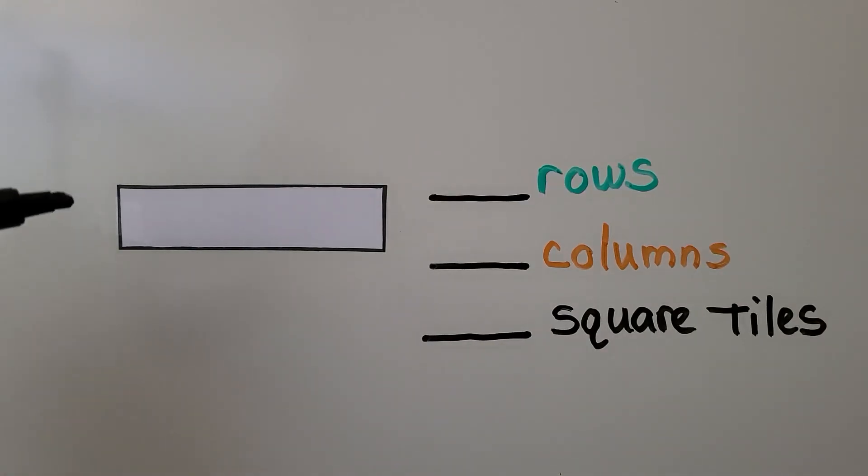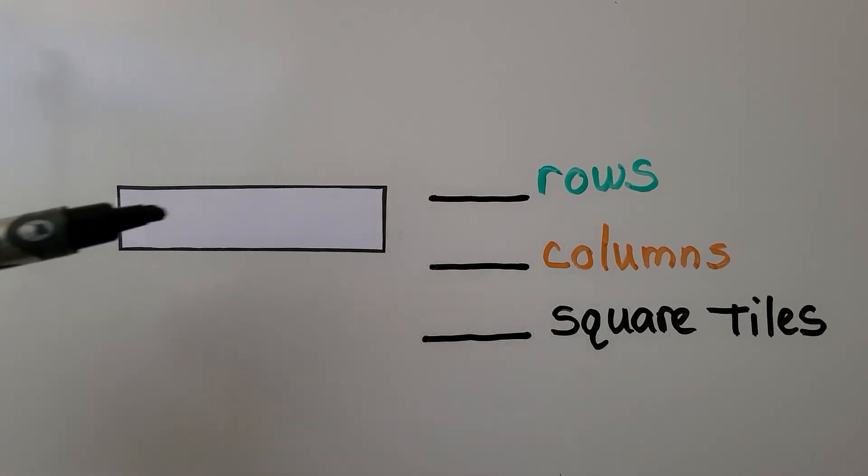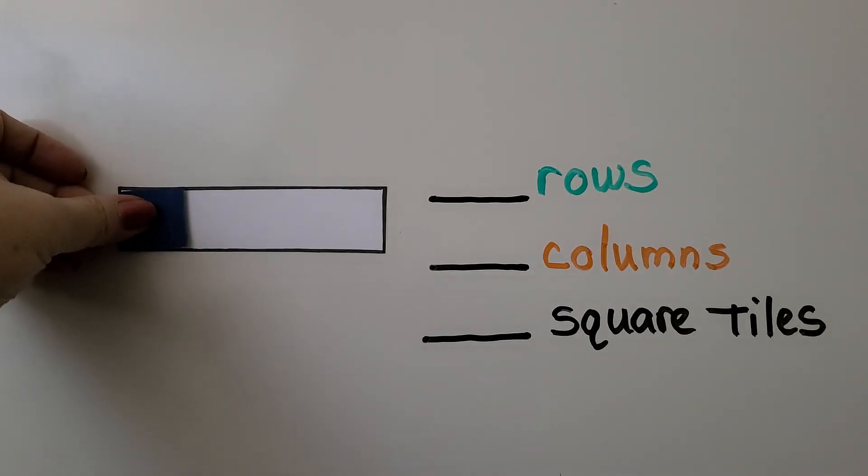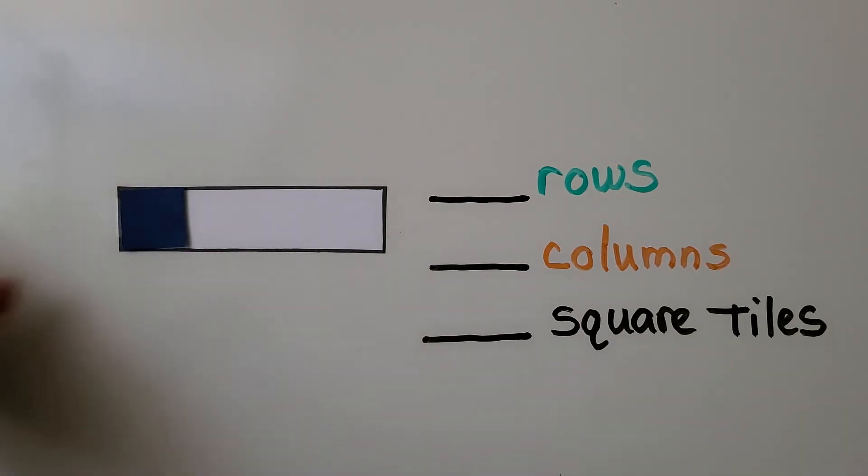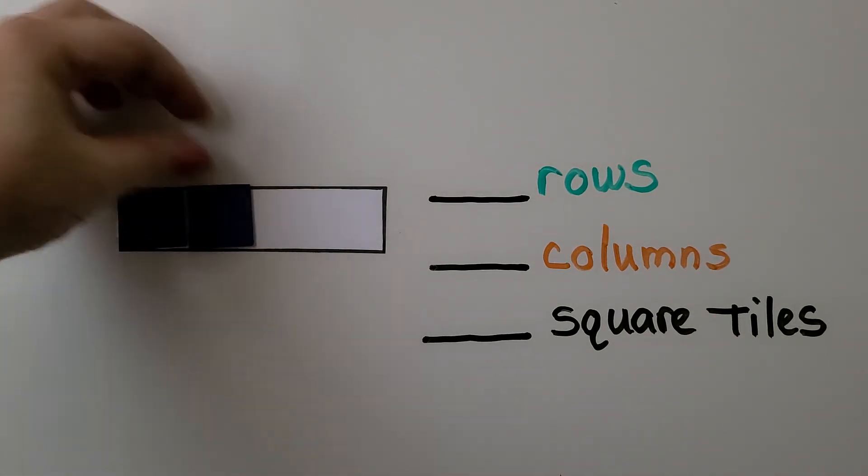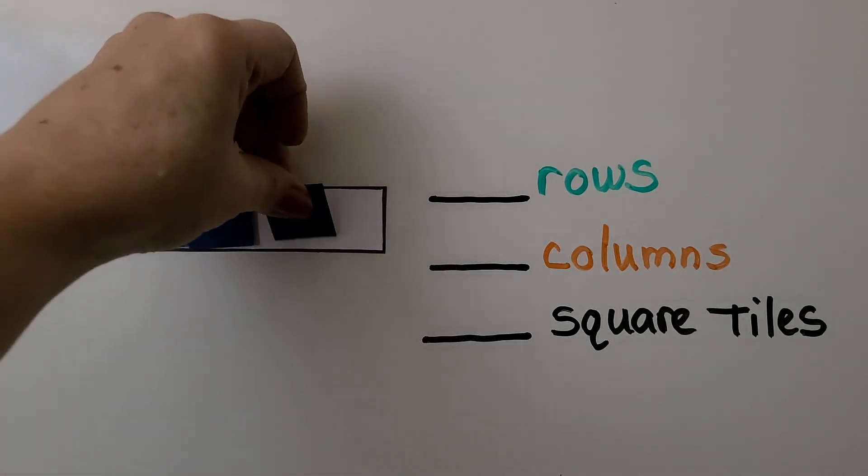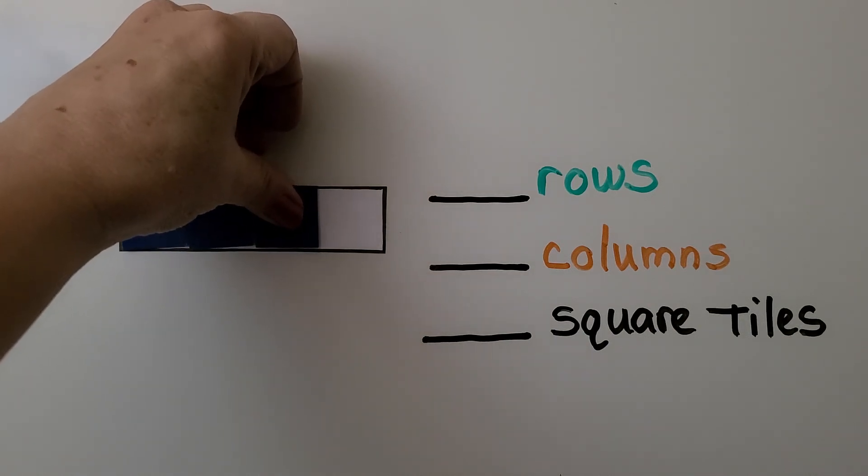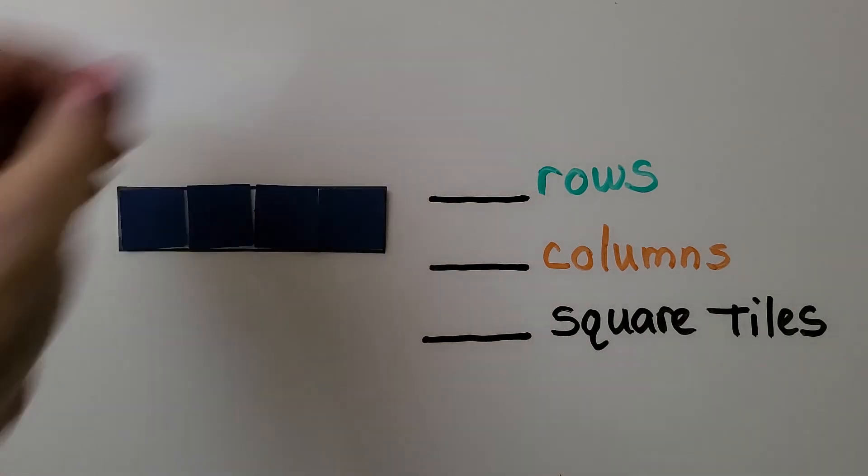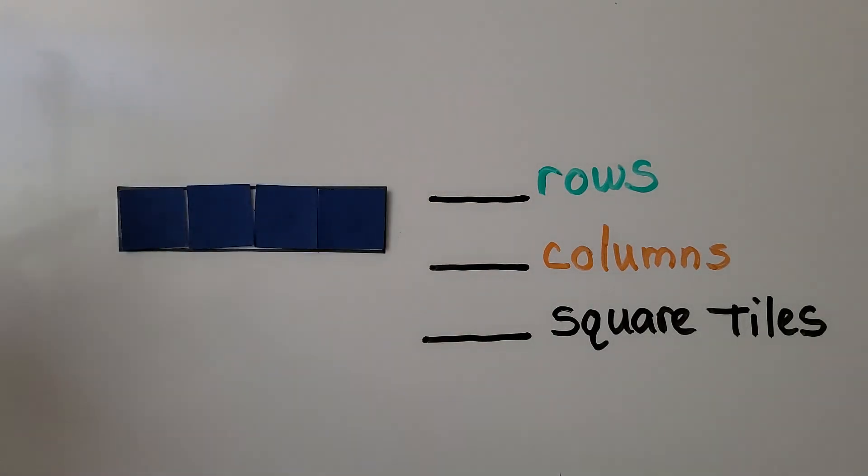This rectangle is very thin, isn't it? It's kind of long and thin. We start by putting one square tile in this corner. We put another one. That's 2. That's 3. That's 4. We only have one row.